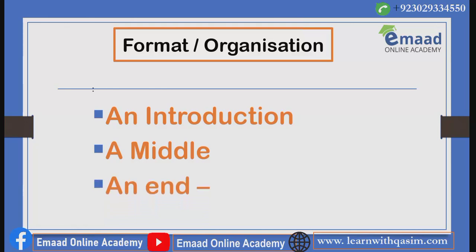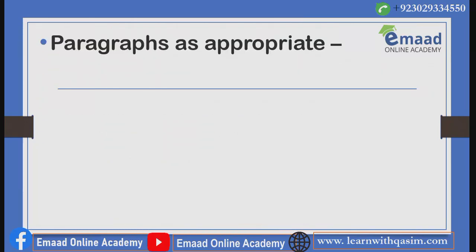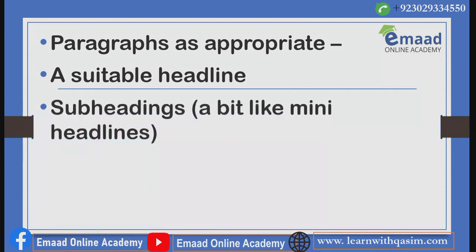In the end section, draw your points together and leave your reader with a clear impression of the argument or viewpoints you would like them to consider. Give your own point of view if clearly asked in the directions. Organize your ideas into paragraphs to develop and support your points convincingly. A suitable headline is very important — it shows the reader at a glance what your article is about. You can also use subheadings, like mini headlines, to break up your article and keep readers' attention.